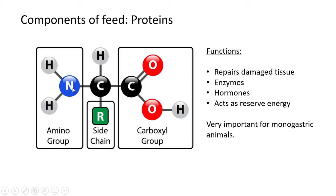For a quick recap on proteins: all proteins have an amino group, a side chain, and a carboxyl group — no need to draw this again as that was last year's work. The functions of proteins are: they repair damaged tissue and are needed for muscle building; some function as enzymes to help with digestion; some proteins are hormones that trigger specific chemical responses; and they act as reserve energy when all fats and carbohydrates have been used up, though this is undesirable as the animal will lose muscle mass.